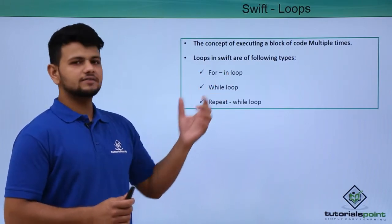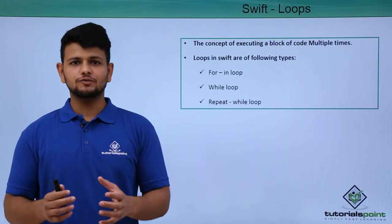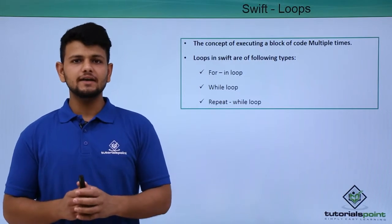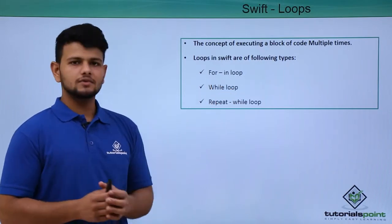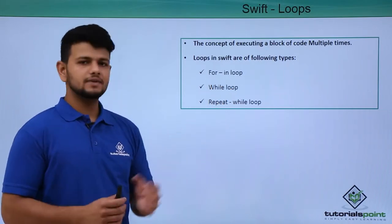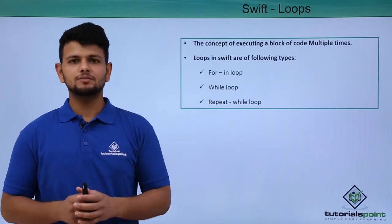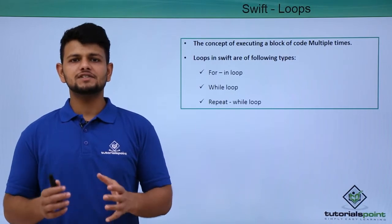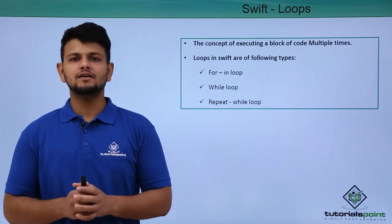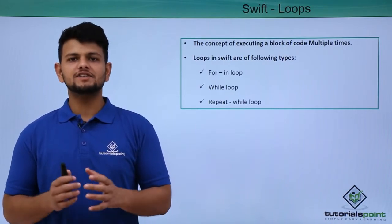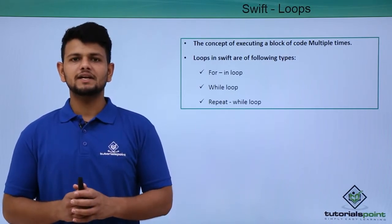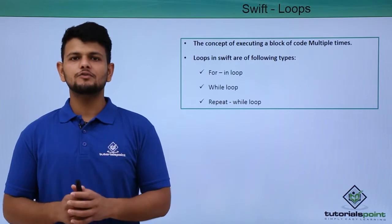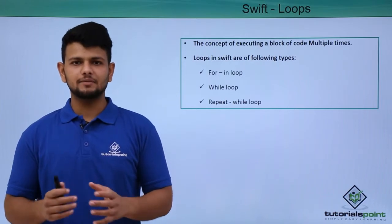In Swift, there are three types of loops currently: the for-in loop, the while loop, and the repeat-while loop. Previous versions of Swift included a basic for loop as well, but in Swift 4, the for loop has been removed.